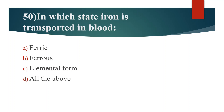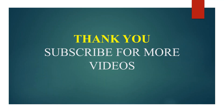Fiftieth question. In which state is iron transported in blood? Option A: Ferric. Option B: Ferrous. Option C: Elemental form. Option D: Oldebo. Answer is Option B: Ferrous.